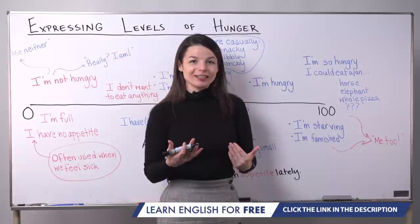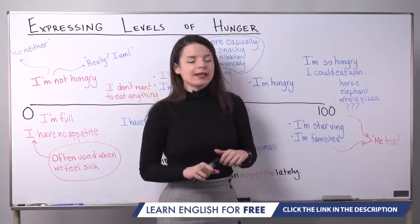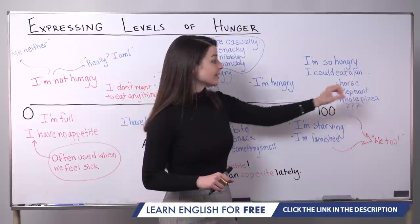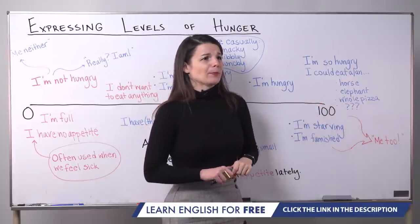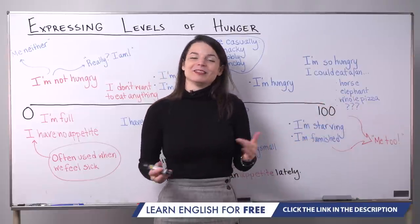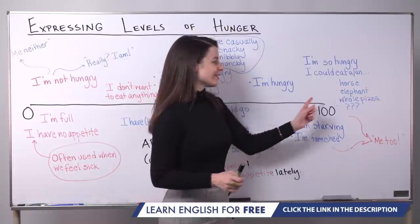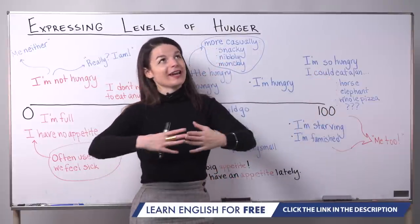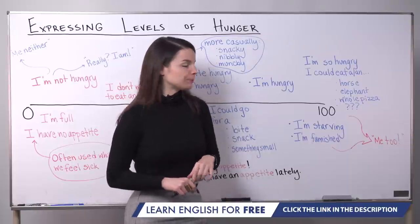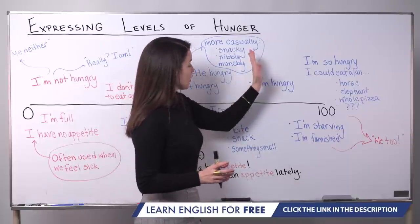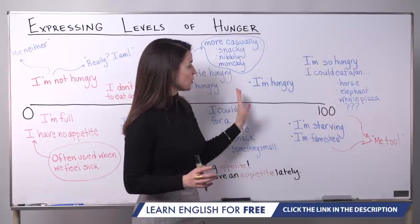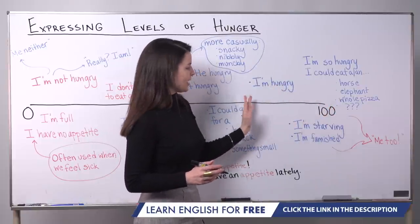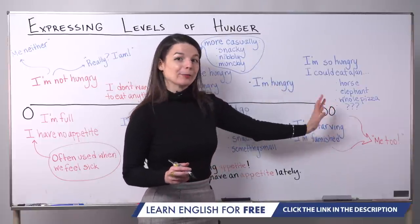It's okay to be a little bit funny with this expression. Horse and elephant are common big animals used. You could say 'I could eat a lion,' for example — that's up to you. The common ones used are horse, elephant, maybe whole cake or whole pizza. These expressions cover roughly the 80% to 100% appetite level on the scale.